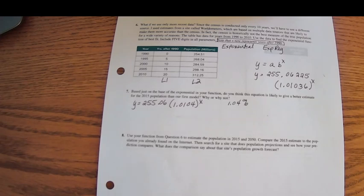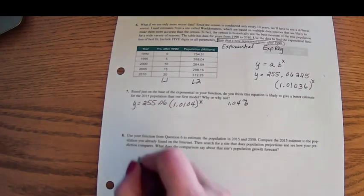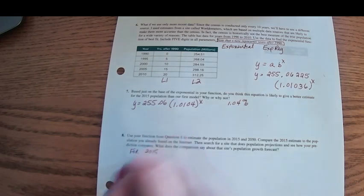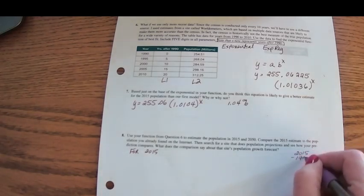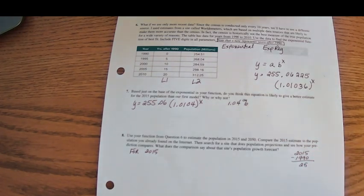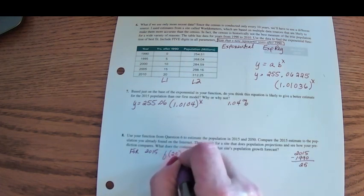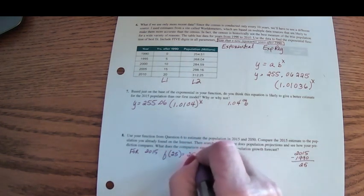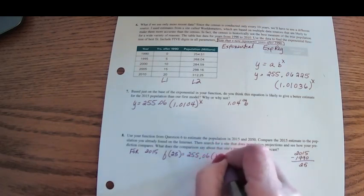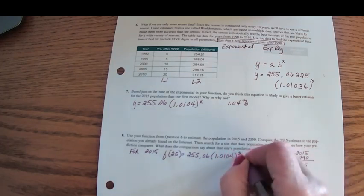And then question number eight says, use our function, this one that the calculator came up with, to estimate the population in 2015 and in 2050. And then we'll compare the estimate to what we found on the internet to see how close the comparison is. All right. So for 2015, how many years since 1990 is 2015? That's 25 years. So this is going to be, use the function when x is equal to 25. 255.06 times 1.0104 raised to the 25th.